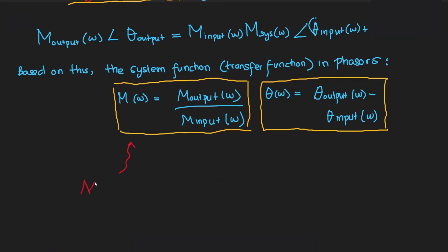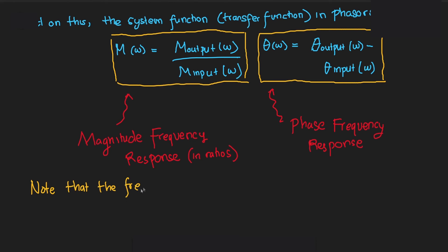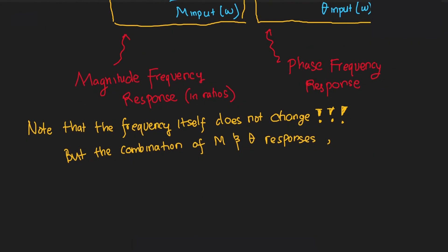The change of magnitude in ratios is called the magnitude frequency response, and the difference of phase is called the phase frequency response. Note that the frequency itself does not change, but the combination of the magnitude and phase frequency response, M(ω)∠φ(ω), is simply called the frequency response of a system.